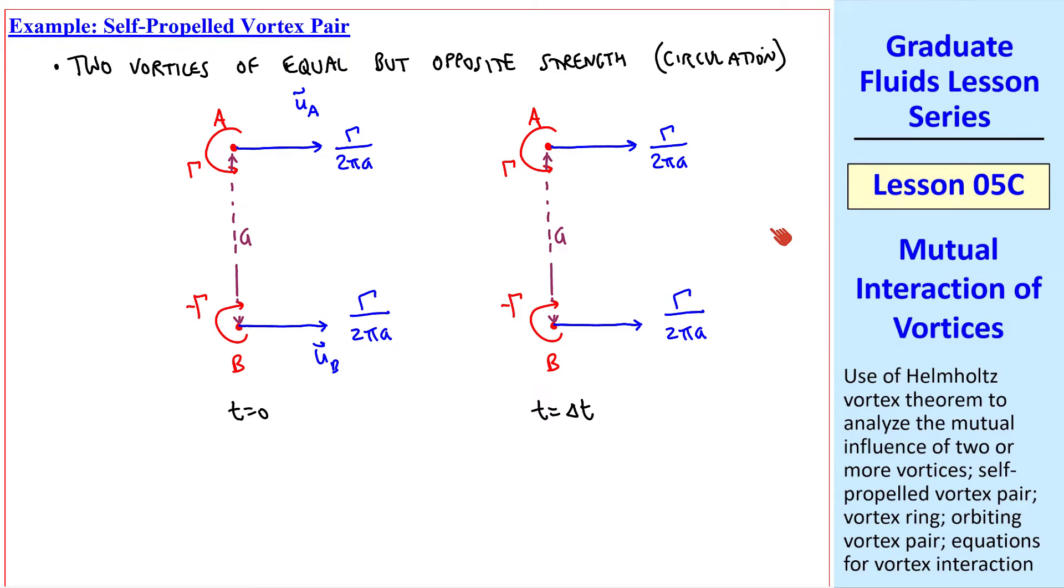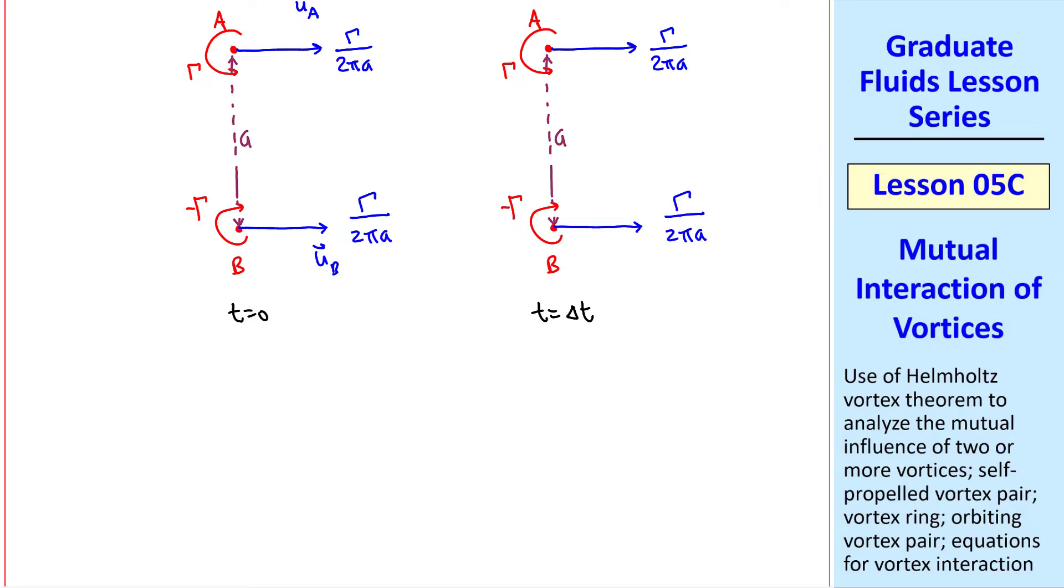They would keep moving to the right forever in an inviscid flow. In real life, of course, these vortices will start viscously decaying, but until their viscous cores hit each other, we'll still see them self-propelled. As their vortex cores grow, they'll eventually cancel each other out.